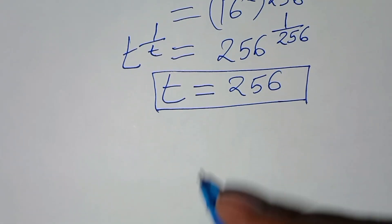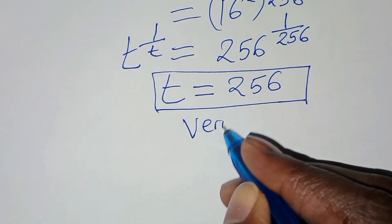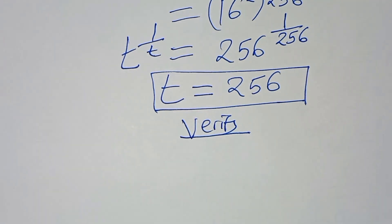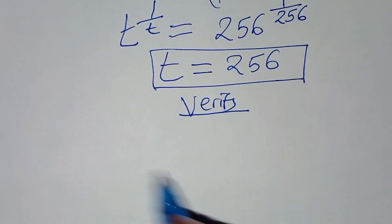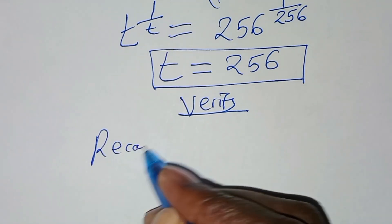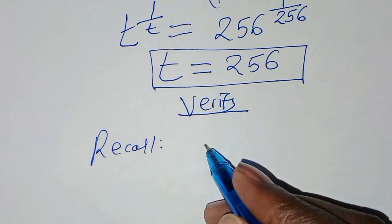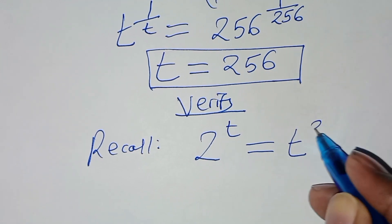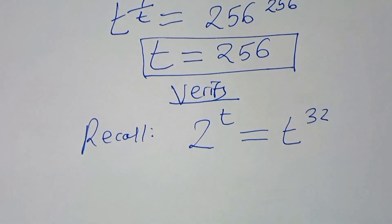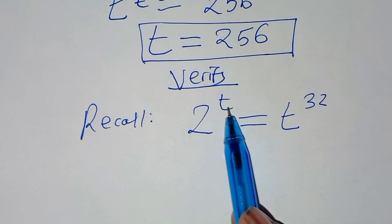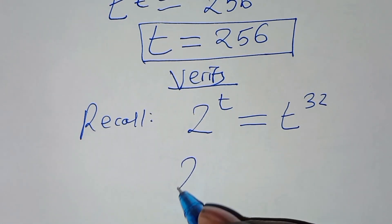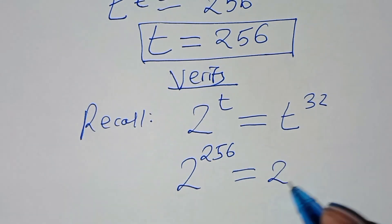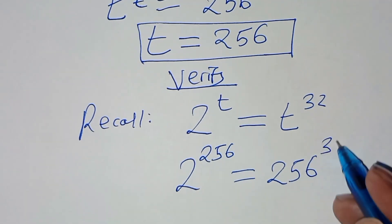Now let's verify that this value of t actually satisfies the equation. Recall that we had 2 to the power t equal to t to the power 32. Let's substitute the value of t. So we'll have 2 to the power 256 equal to 256 raised to the power 32.